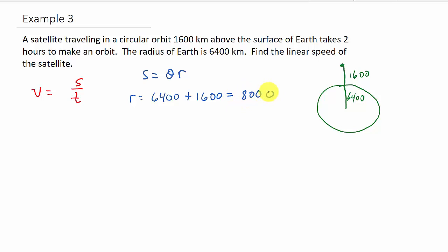So the 6400 plus the 1600, that would be our radius. And that is equal to 8,000 kilometers. So there's our radius.